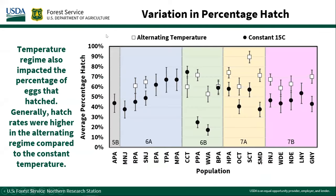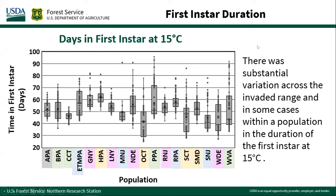There are also effects of these two temperature regimes on the ability of eggs to hatch — for some populations, the warmer regime resulted in much worse performance than the alternating regime, while for others they were much closer. For first instars, holding them at a constant 15 degrees C shows substantial variation across populations that does not correlate with what plant hardiness zone they came from. There's more to be looked at here, but this substantial variation means there is something for nature to work on — the possibility of adaptation.